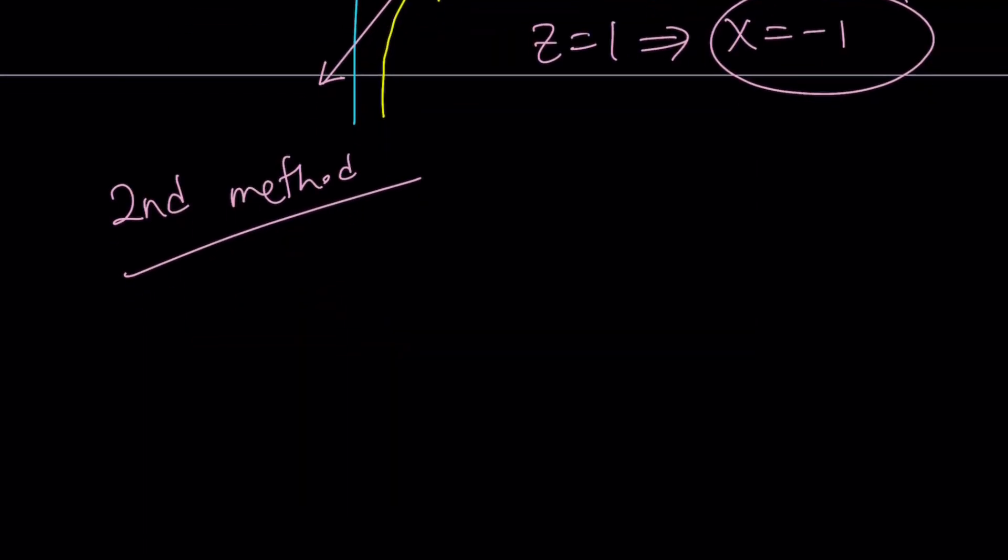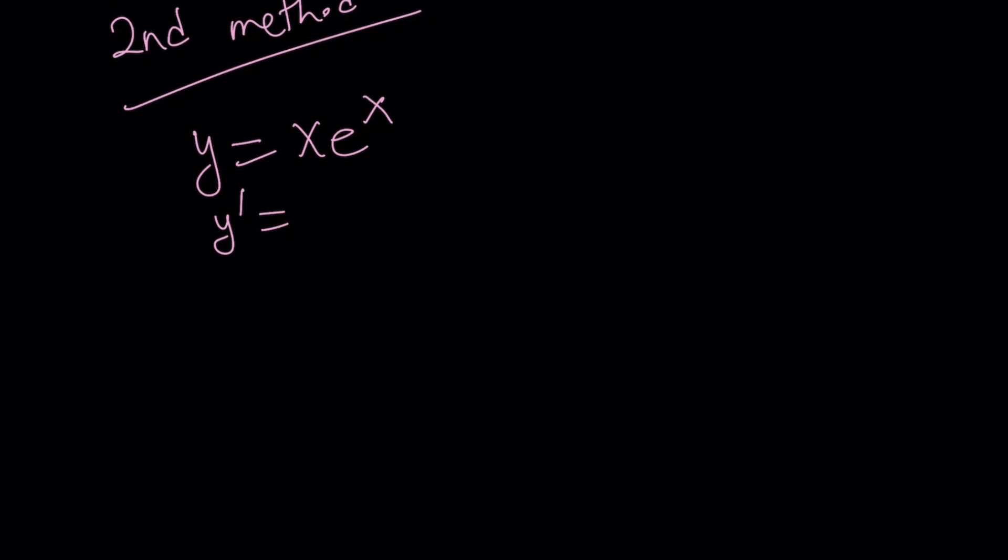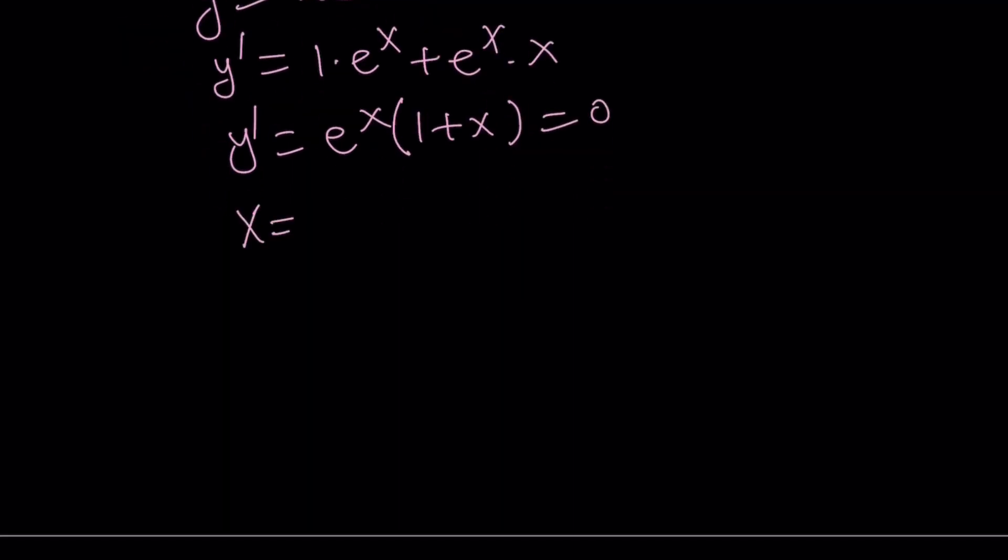Let's take a look at the second method. What happens if I just use y equals x times e to the power of x? Absolutely, you can use it. Differentiate. Derivative of x times e to the power of x plus the derivative of e to the power of x times x. You can write this as e to the power of x multiplied by 1 plus x. Set it equal to 0. And from here, we get the critical value x equals negative 1 because e to the power of x cannot be 0. So now let's make a table.